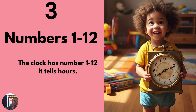The third part is the numbers. A clock always has numbers from 1 to 12: 1, 2, 3, 4, 5, 6, 7, 8, 9, 10, 11, 12. It tells hours.